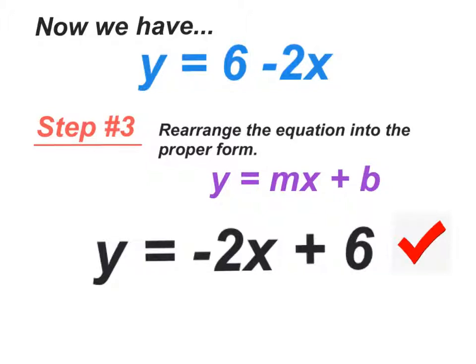Now finally, this is step number 3, and this is the easy step. All we have to do is rearrange it. We have to take on the right-hand side here, we have to take the positive 6 and the negative 2x and flip-flop them around, because it has to be in the form y equals mx plus b. So as a result, once we rearrange those terms, our equation in slope-intercept form is y is equal to negative 2x plus 6.